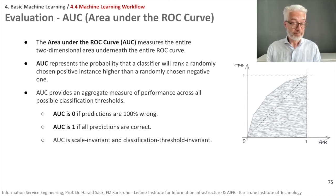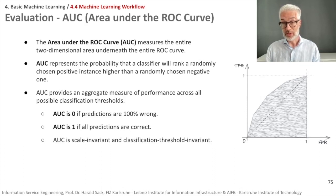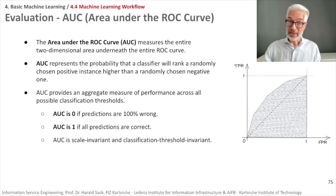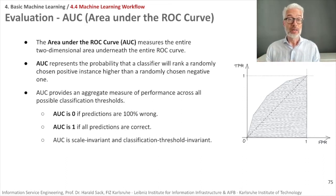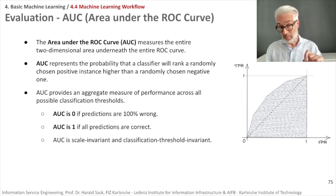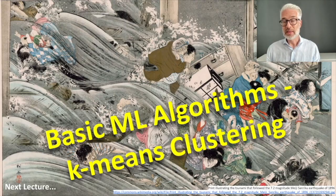These are different ways to determine the quality of machine learning models — the most important ones we now know are accuracy, recall, precision, F1, the ROC curve, and the AUC for comparing different ROC curves. We now know how to evaluate a machine learning algorithm. Next, we will look at specific examples of machine learning algorithms, starting with unsupervised learning and the k-means clustering algorithm — but we will do this in the next lecture.